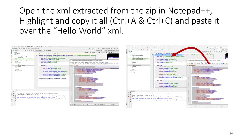With Android Studio open to the XML layout in code view, open the other project's XML in a text editor — I like Notepad++. Copy it all from Notepad++ and paste it over the XML view in Android Studio. We started with just a simple TextView saying 'hello world', and now we have a TextView saying 'enter your name', an EditText, a button, and so on.